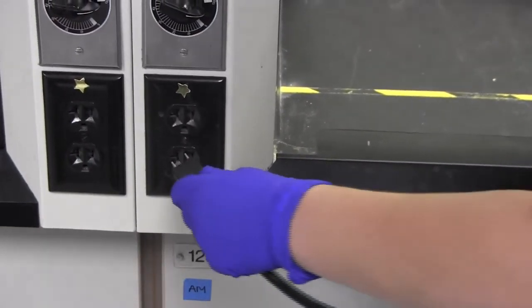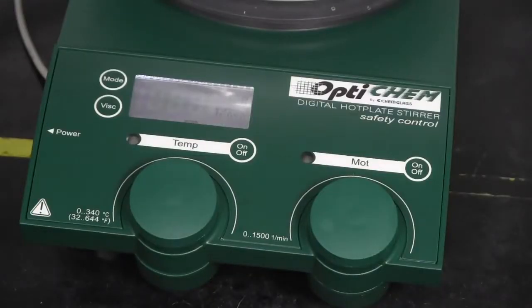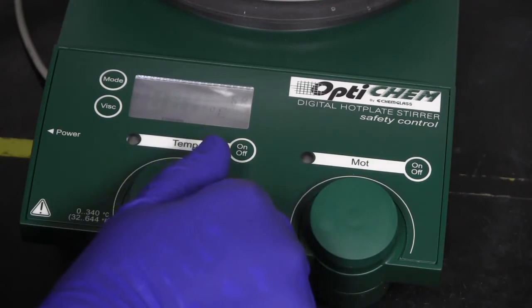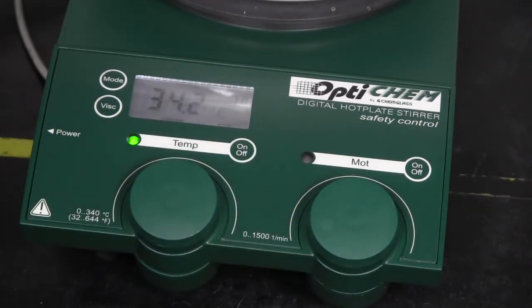Plug in your hot plate into the bottom outlet. The top one uses a different setting. Then turn on the heat by adjusting the left knob. Set the desired temperature by looking at the smaller number in the upper portion of the LED screen. The larger number is the current temperature.